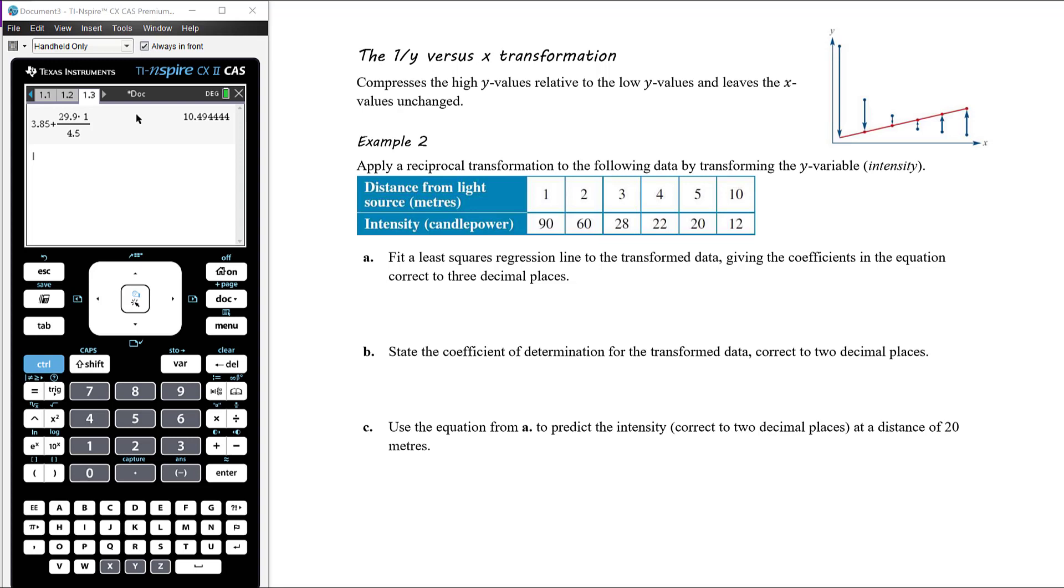Apply a reciprocal transformation to the following data by transforming the y variable, which in this case is intensity. We've got x is the distance and y is the intensity, so we want to transform the y variable this time. In my CAS here, I've already entered this data in. Let me open that document up. Distance and intensity.